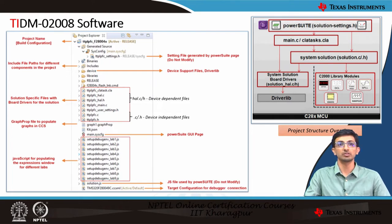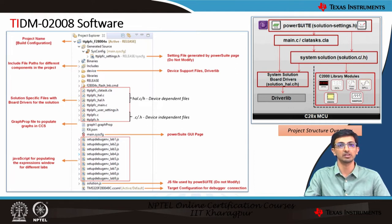Then we come to the solution-specific files with drivers for the solution. If you are using CLA for any of the tasks, you will have a file called CLA task underscore CLA along with the main dot C, which contains the C28X-specific code. There are also files such as Totem Pole PFC underscore hardware abstraction layer — the HAL dot C as well as HAL dot H — which are device-dependent files containing all device-specific information of F28004X.